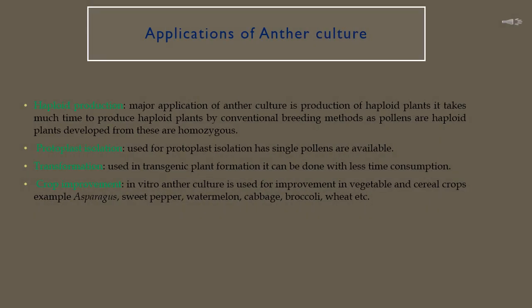Next, we will move to the applications of anther culture. The major application is haploid production — anther culture produces haploid plants much faster than conventional breeding methods, and plants developed from haploid pollens are homozygous. It is also used for protoplast isolation and for transgenic plant formation through transformation, with less time consumption. Finally, in vitro anther culture is used for crop improvement in vegetables and cereals such as asparagus, sweet pepper, watermelon, cabbage, broccoli, and wheat.